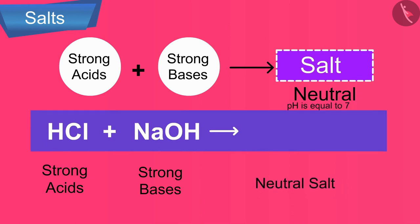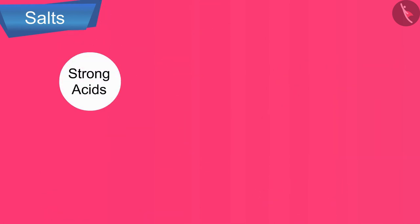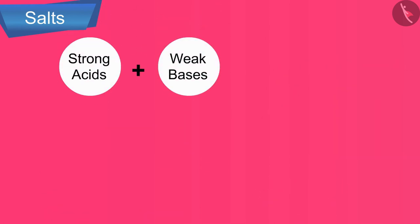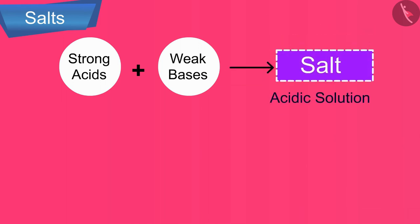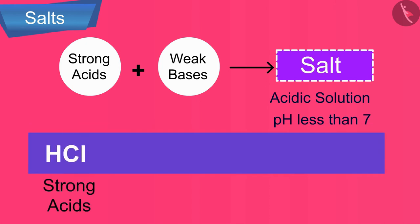Secondly, the salts of strong acids and weak bases give acidic solution with pH less than 7. Let us understand this with the help of an example: ammonium chloride. It is formed by a strong acid, hydrochloric acid, and a weak base, ammonium hydroxide.